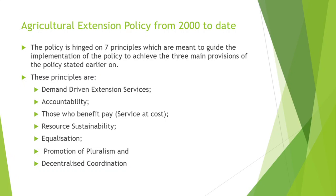Principle number two is accountability. In the past, farmers were considered as beneficiaries of extension, but of late farmers are seen as clients to extension who have an interest in extension. There should be clear mechanisms of ensuring that extension is accountable to farmers and their representatives, and that farmers must be able to choose from different extension deliveries where extension is for public interest. The mechanisms for accountability include political decentralization, strengthening farm organizations, as well as financing of farm organizations directly.